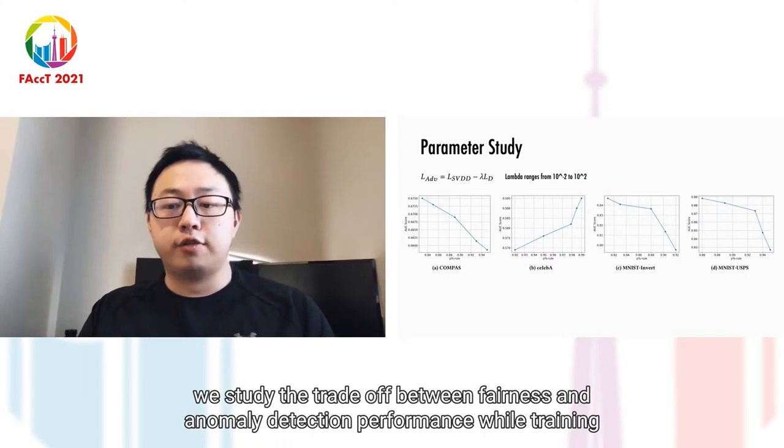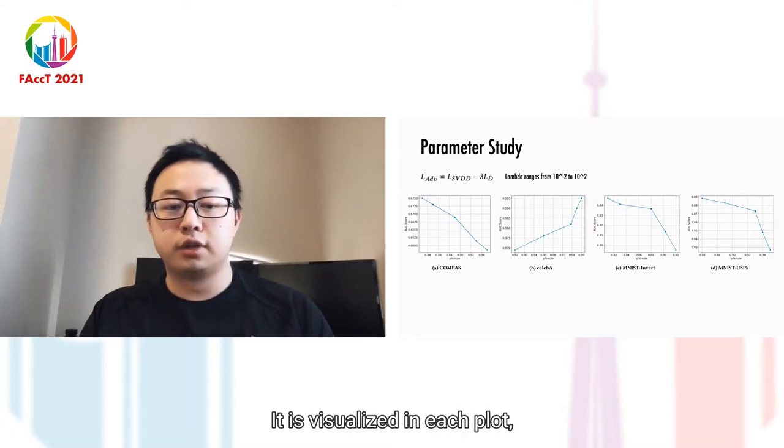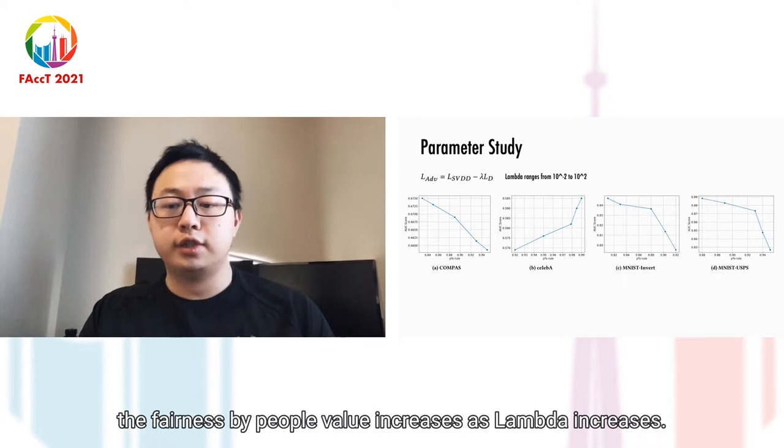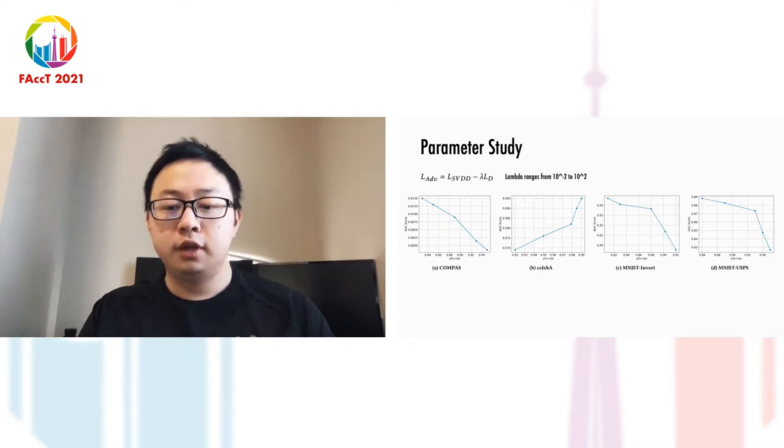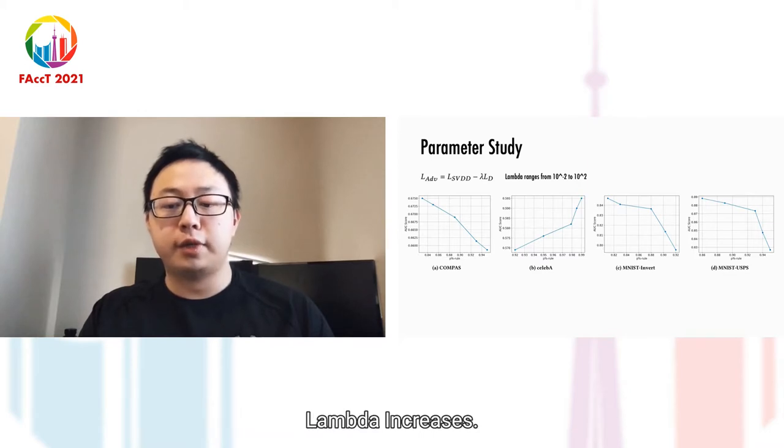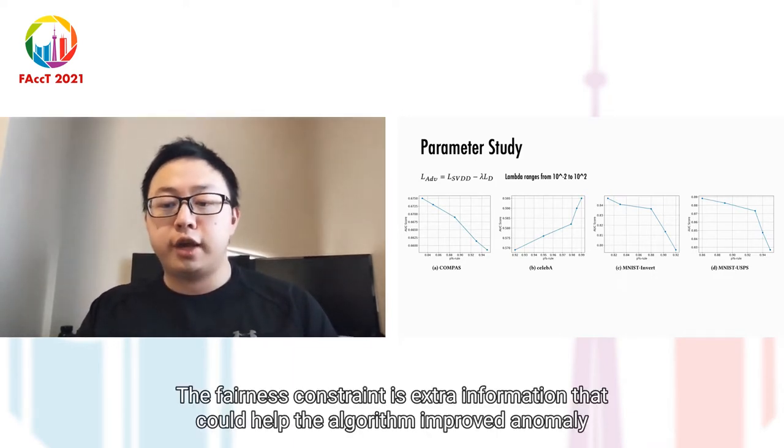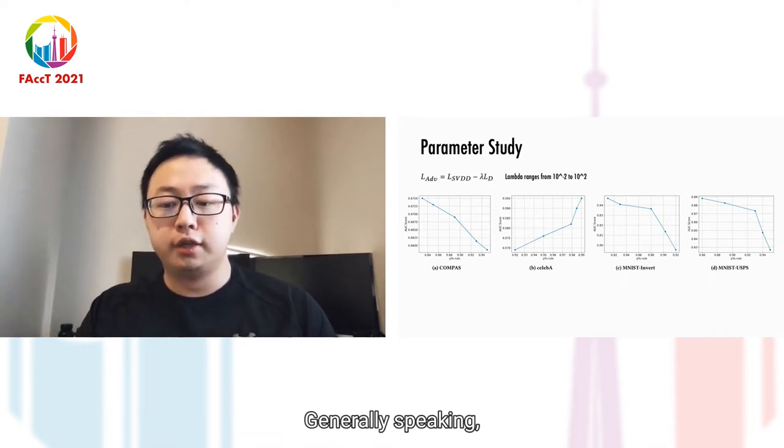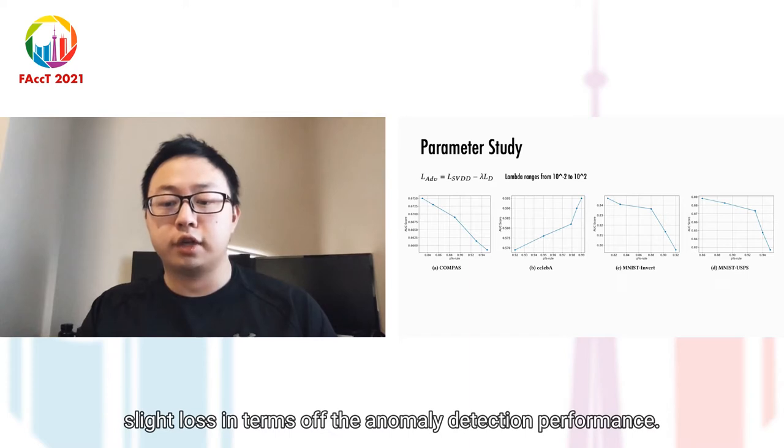Further, we study the trade-off between fairness and anomaly detection performance while tuning the hyperparameter lambda. Note lambda ranges from 0.01 to 100, visualized in each plot from left to right. In all four datasets, the fairness-by-p-rule value increases as lambda increases. The AUC scores decrease in most datasets as lambda increases. We have also noticed one exception result in the CELEB-A dataset, where both fairness-by-p-rule and AUC score increase as lambda increases. Generally, training DeepFair SVDD with larger lambda leads to fairer results and usually a slight loss in anomaly detection performance.